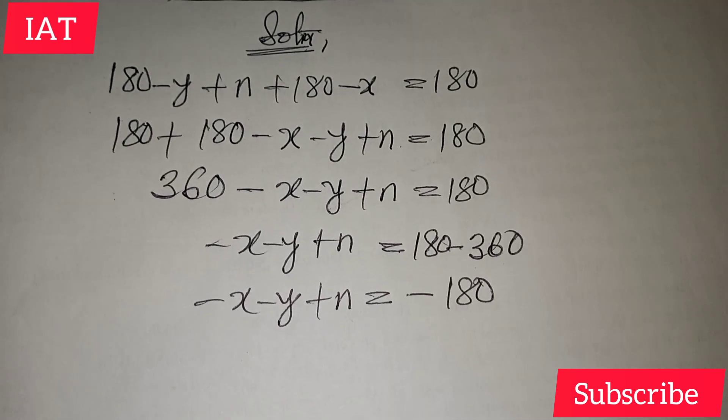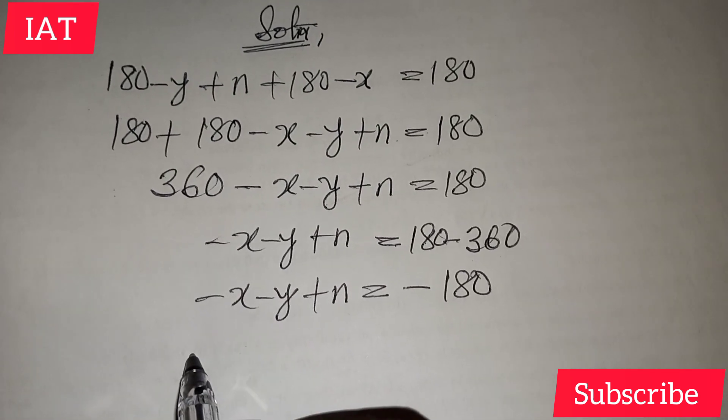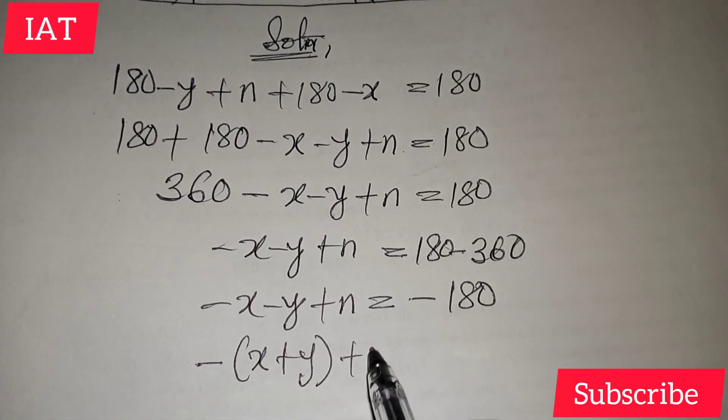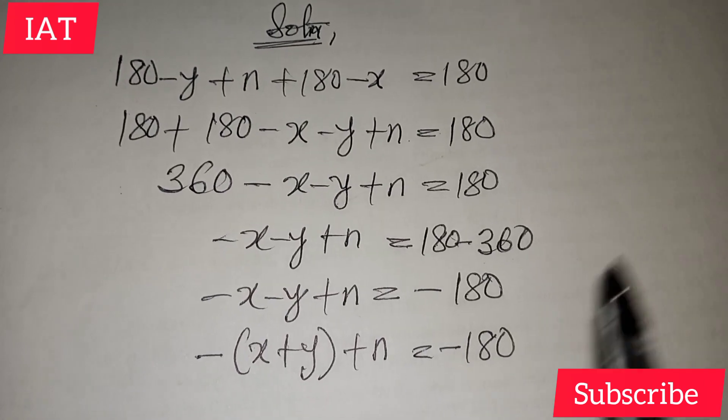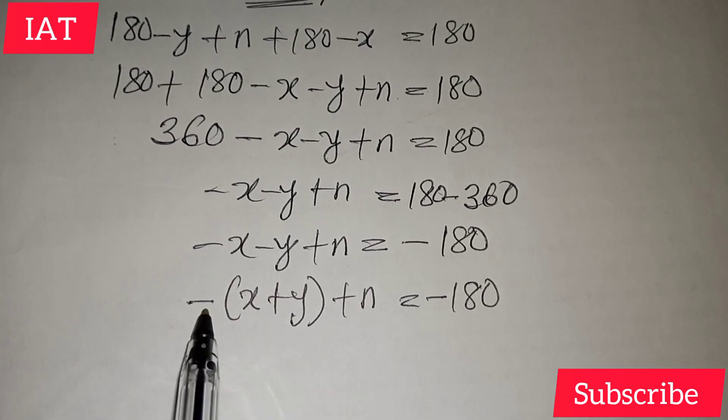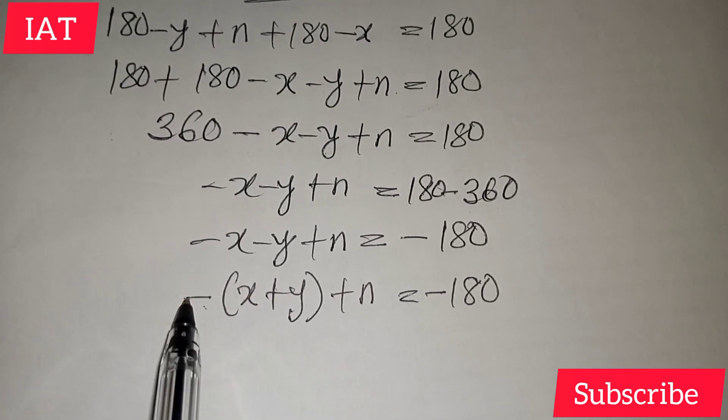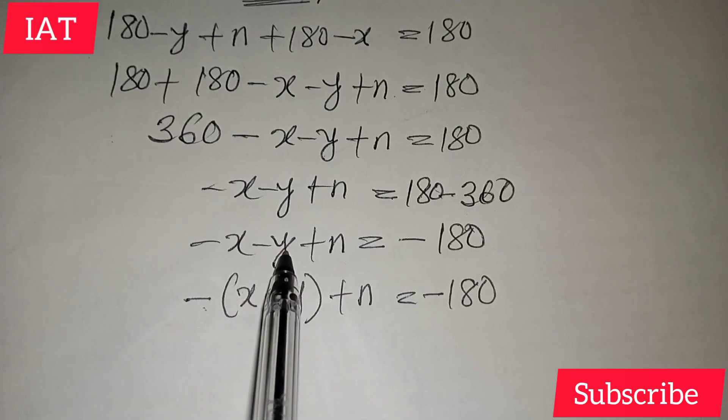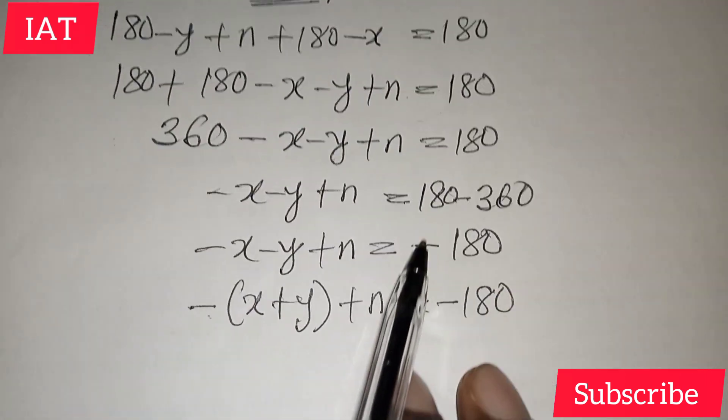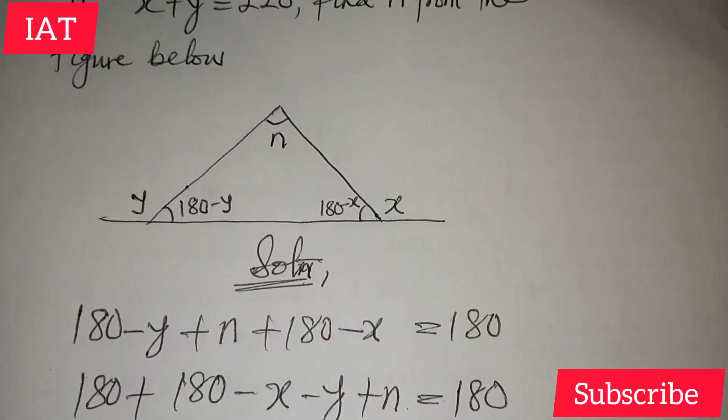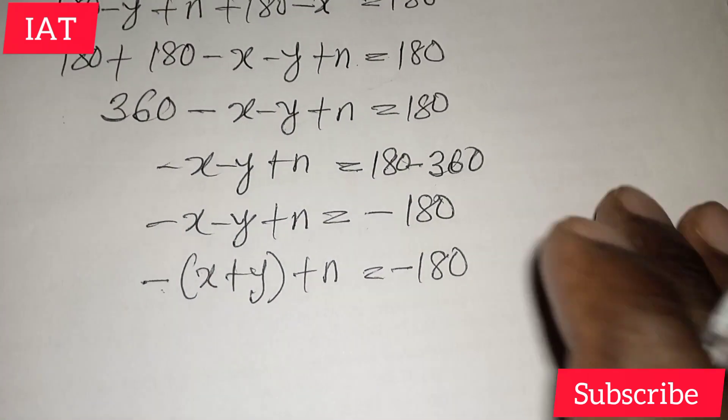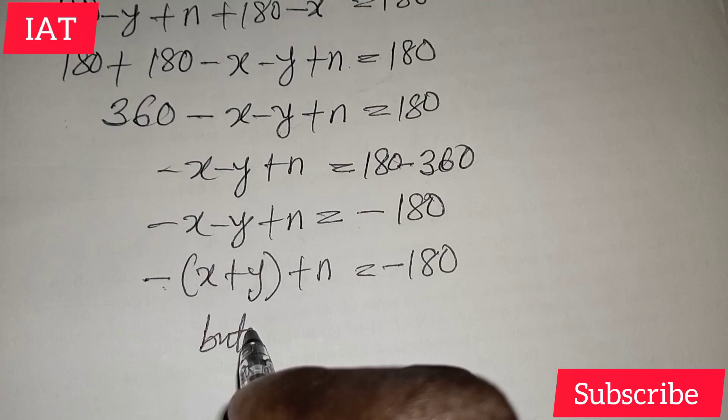This is more like we're having minus of x plus y plus n equal to minus 180, because if we use minus to distribute into this bracket, minus times x gives minus x and minus times y gives minus y. Keep in mind it was given from the equation that x plus y is equal to 220.